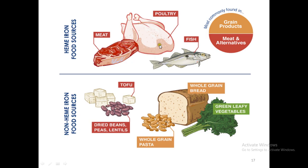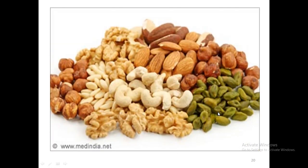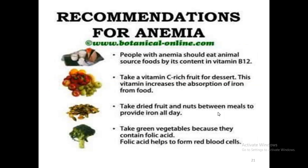The ferric form of iron is found in cereals like wheat, corn, rice, pulses, soya beans, green leafy vegetables, dried fruits, fresh fruits, potatoes, etc. Nuts also contain lots of iron, but again in the ferric form. People suffering from anemia need to eat more animal sources of iron, which also contains vitamin B12. Taking a vitamin C-rich fruit helps convert ferric iron to ferrous iron, improving absorption. Dried fruits and nuts between meals can also be good sources of iron, provided that ferric is converted to ferrous.